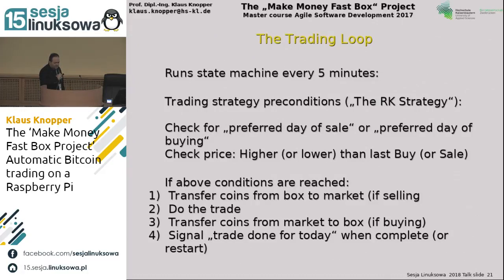The trading loop: check the prepared day of sale, check if the price is appropriately higher or lower. If conditions are met, transfer coins from the box to the market if selling, do the trade, then transfer coins from the market back to the box if buying. Signal trade done for today. If any of these tasks take longer, it rechecks every five minutes — it can take an entire day and still work. If the transaction is not done within a day, it is cancelled. You probably see the flaw in this algorithm — why it wouldn't work today. Well, maybe today it would, but it didn't work in December.